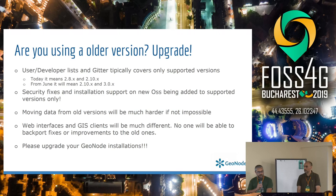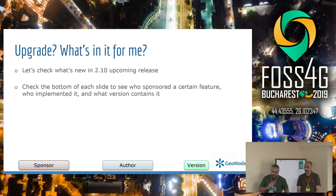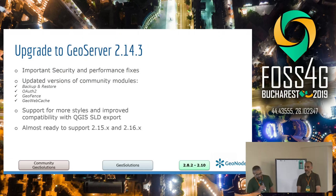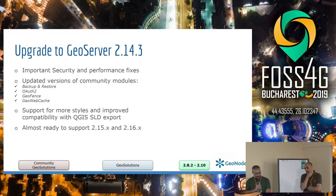The GIS clients have been upgraded and the new one has many more functionalities. It's responsive, so it can be used on a mobile device, and the architecture is much more stable and reliable. With the update to GeoNode 2.10 you also get important security fixes, upgraded community modules on GeoServer, an updated backup and restore module, improved GeoServer authentication, upgraded Geofence for granular security rules, and upgraded GeoWebCache.